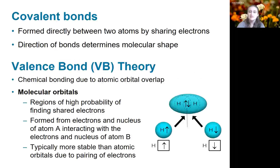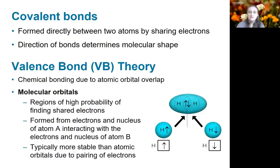We've already discussed the idea of covalent bonds, which are formed by the sharing of electrons between two atoms. This sharing results in highly directional connections between the atoms and causes covalent compounds to have definite 3D structure. Now we're going to take this picture a step further by introducing a theoretical model known as valence bond theory, in which we think about chemical bonding as being due to the overlap of atomic orbitals. This picture arises from solving the Schrödinger equation for molecules, where molecular orbitals correspond to regions of high probability and occur where bonds are formed.